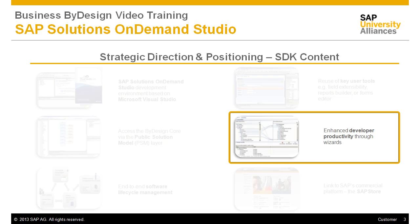All you have to do is select the desired business object you need an interface for, choose the operations like create, update, delete, and finish the wizard. After that you can directly download the WSDL, which is the description of your service interface. This can then be used to integrate with third-party applications — a very easy and efficient way to realize customer-specific integration scenarios.